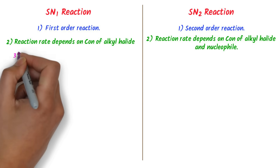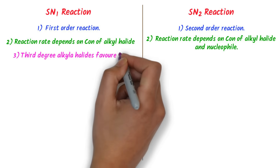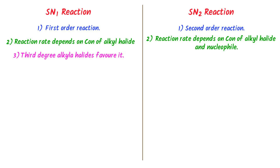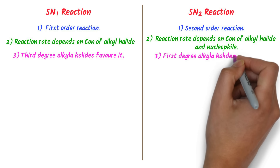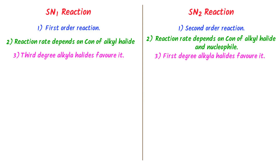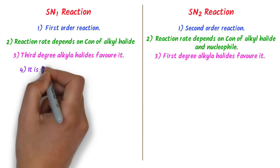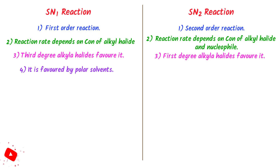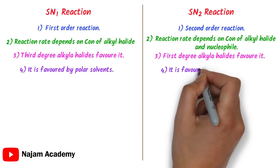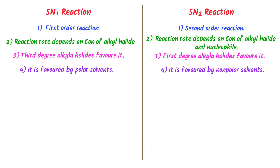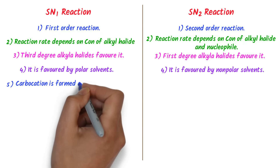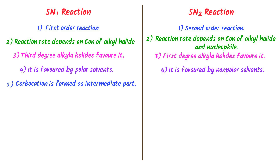Thirdly, 3rd degree alkyl halides favor SN1 reaction, while 1st degree alkyl halides favor SN2 reaction. Fourthly, SN1 is favored by polar solvents, while SN2 reaction is favored by non-polar solvents. Fifthly, in SN1 reactions a carbocation is formed as an intermediate part of the reaction, while in SN2 reactions no carbocation is formed.